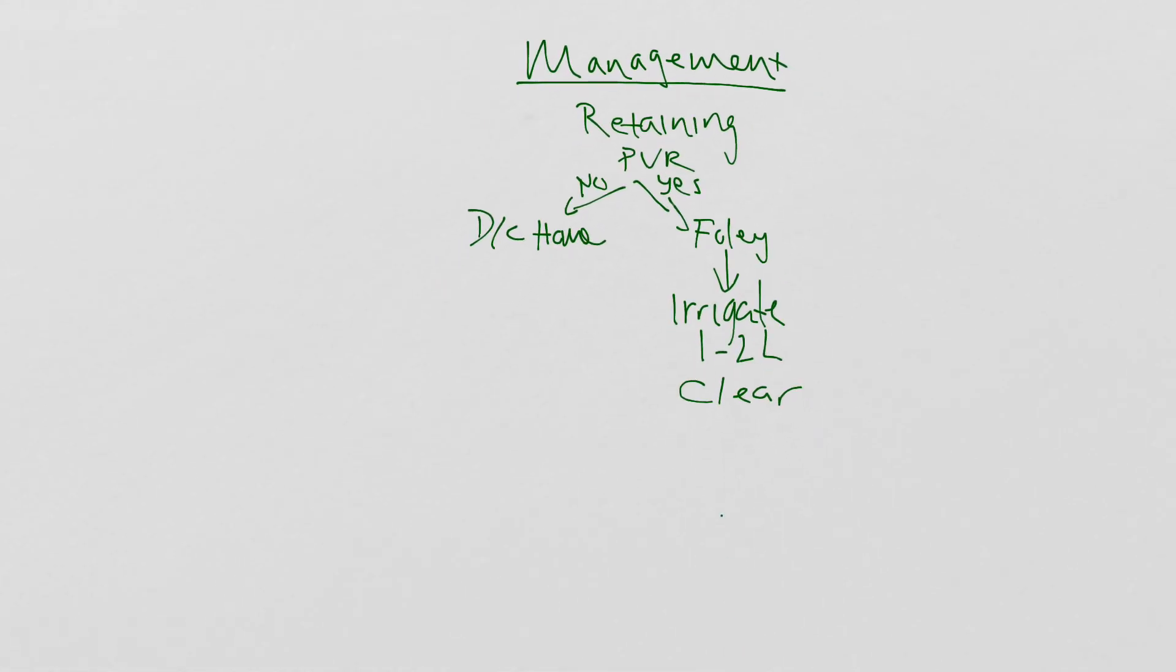If you are able to get it clear, the patient can be discharged home after an observation period where they do not develop gross hematuria again. The patient would be sent home with the Foley and would have a voiding trial as an outpatient.